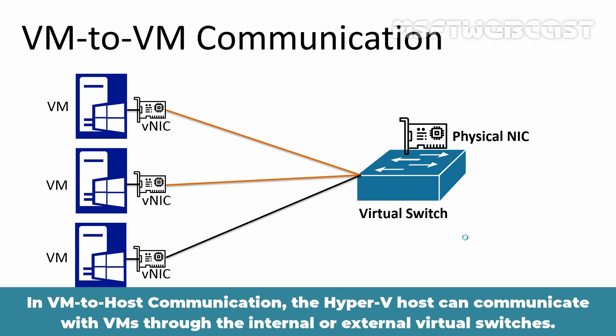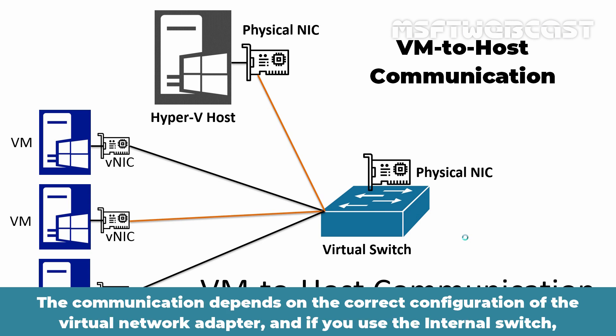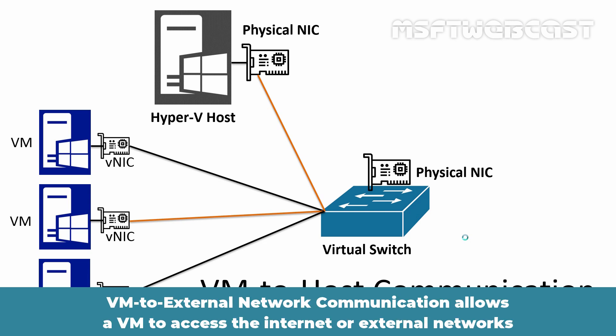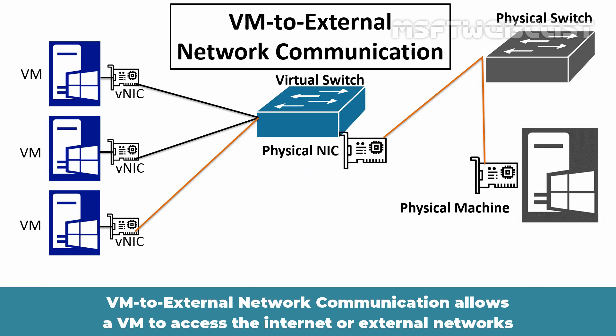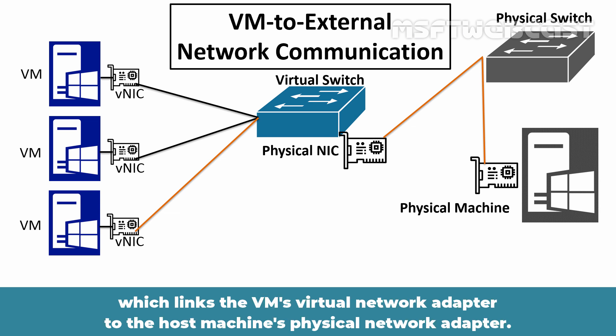In VM-to-Host communication, the Hyper-V host can communicate with VMs through the internal or external virtual switches. The communication depends on the correct configuration of the virtual network adapter, and if you use the internal switch, the host and VMs can share resources directly. VM-to-External network communication allows a VM to access external networks by connecting it to an external virtual switch, which links the VM's virtual network adapter to the host machine's physical network adapter.